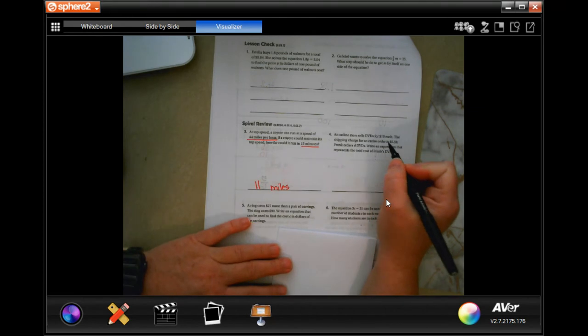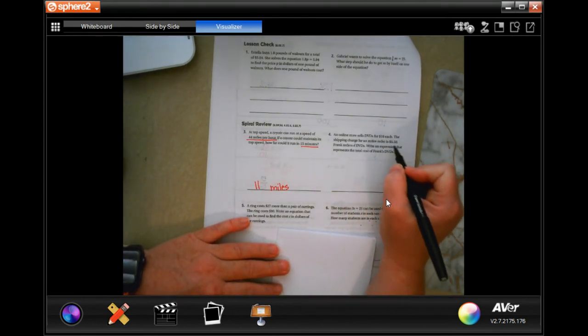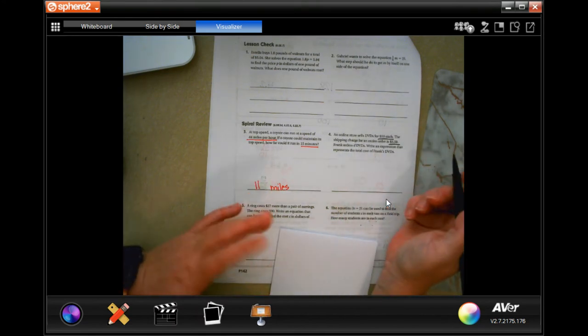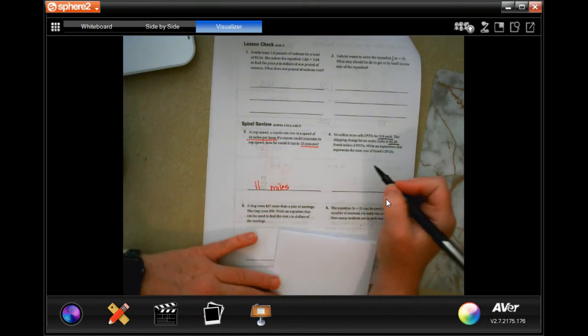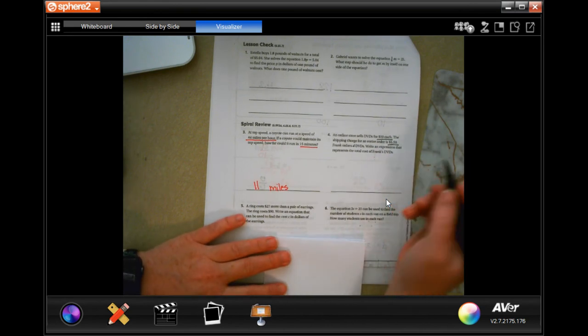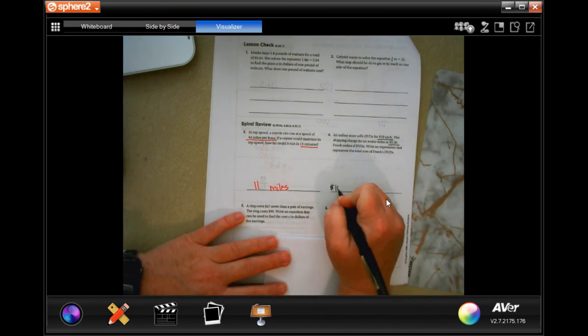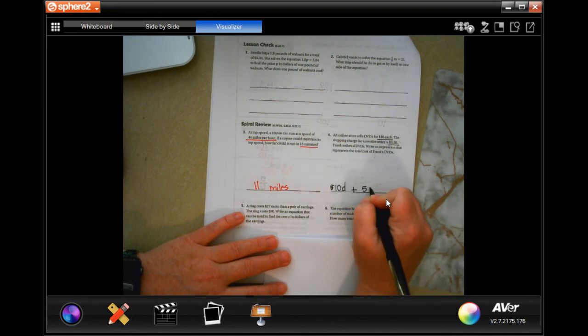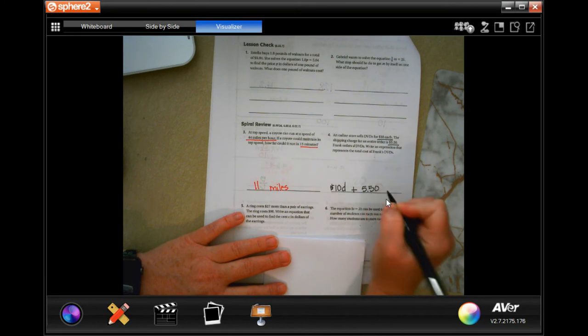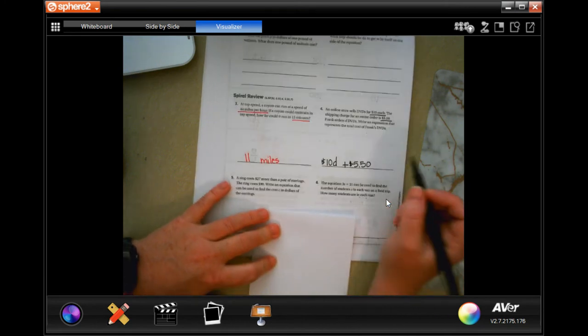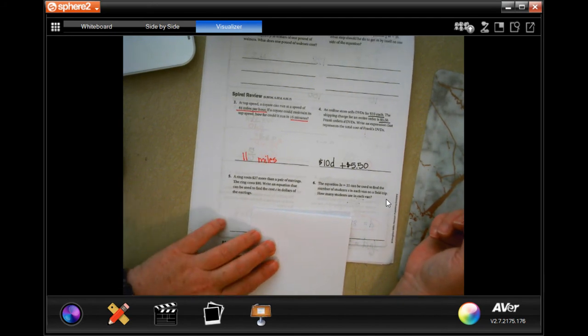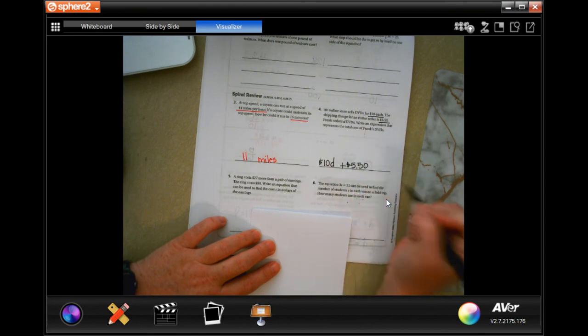An online store sells DVDs for $10 each. The shipping charge for an entire order is $5.50. Frank orders D DVDs, however many, write an expression that represents the total cost of Frank's DVDs. Well, it's $10 per DVD plus the $5.50 to ship it. That's it, guys. Make sure you have your decimal in there.